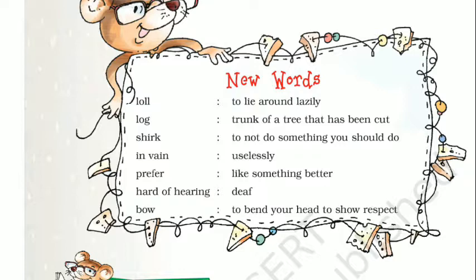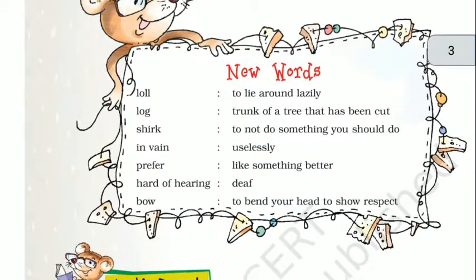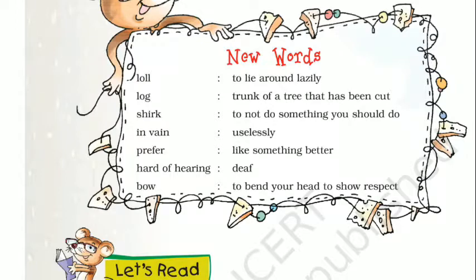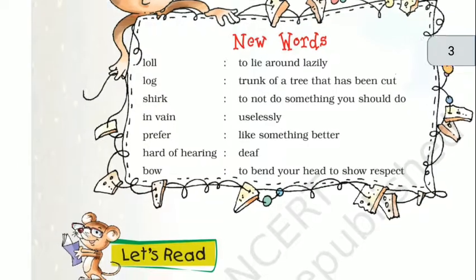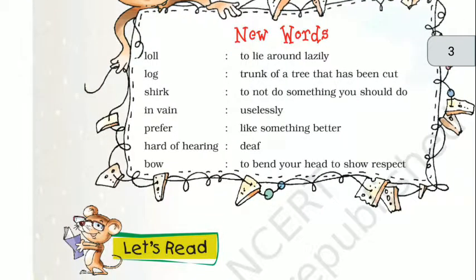In vain — matlab uselessly, bekar. Prefer — to like something better; matlab kisi cheez ko zyada pasand karna. Hard of hearing — bahara na sunne wala; bahare ka wo bahana karta hai. Bow — to bend your head to show respect.